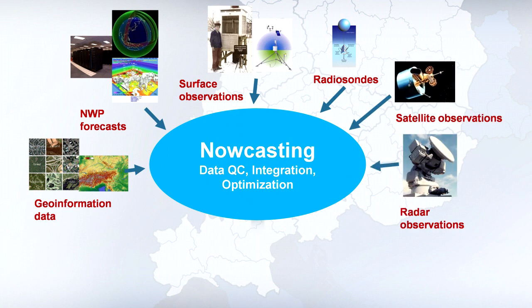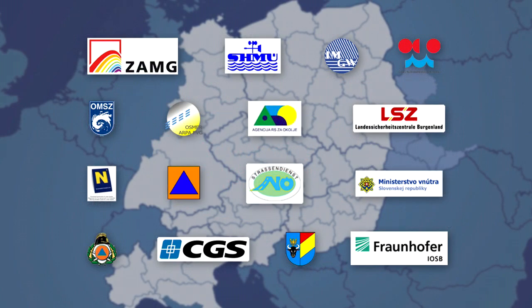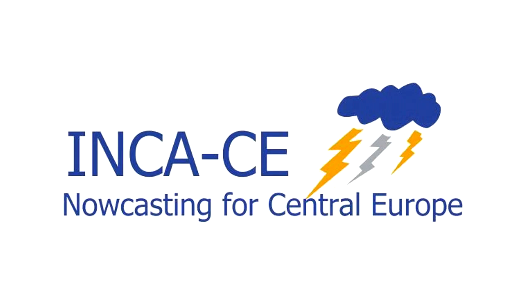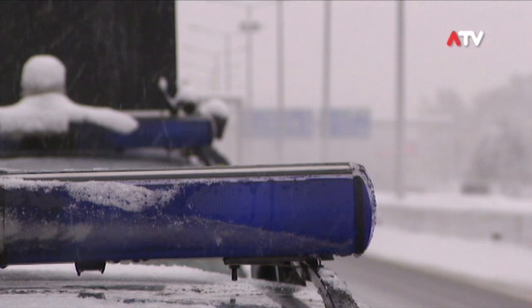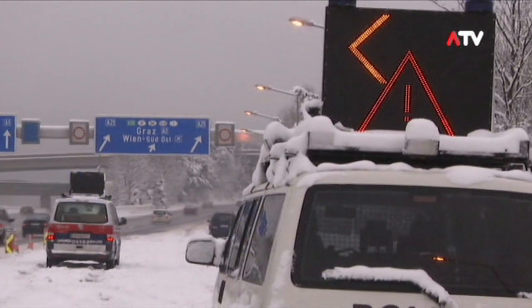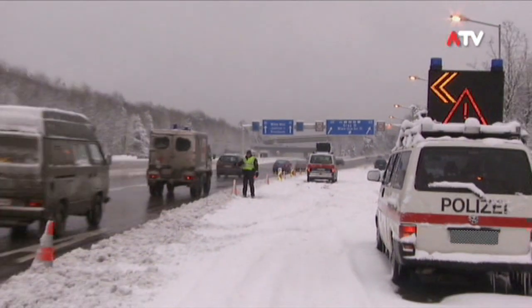Very short-range forecasting is one of the main tasks of several national meteorological services in the Central European area taking part in the development of the INCA forecasting system. This system is provided as part of the Central European Project, INCA CE. Weather conditions and their development affect our daily lives in many circumstances.